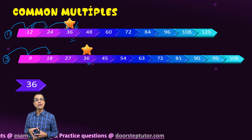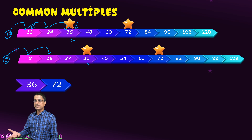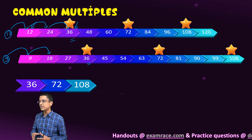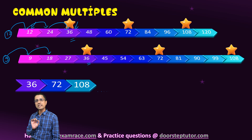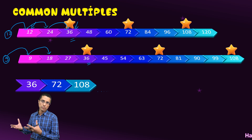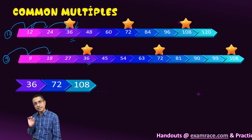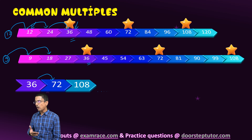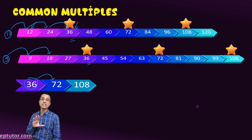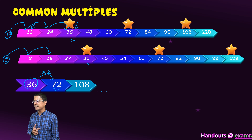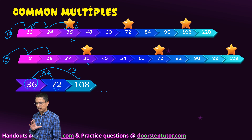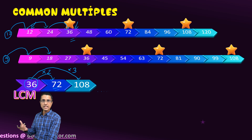The first such number in the case of 12 and 9 is 36. The next number is of course 72, and after that 108. The common multiples do not really end there — I can come up with infinite such common multiples between 12 and 9. The very first common multiple, which is 36, is known as the least common multiple, or LCM. Other common multiples between 12 and 9 are just multiples of 36.